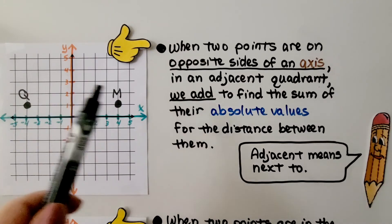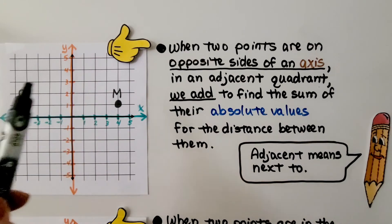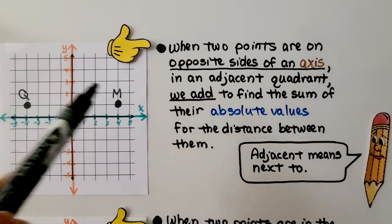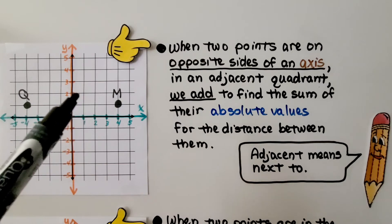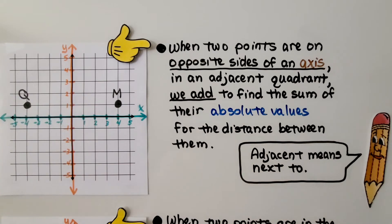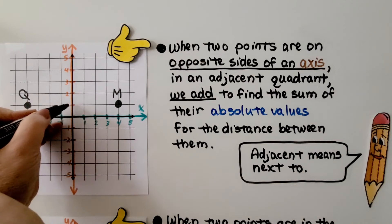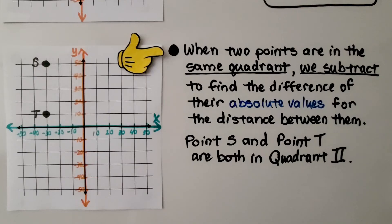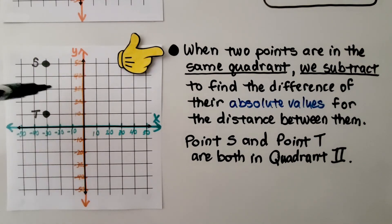When two points are on opposite sides of an axis — like points Q and M, which are on opposite sides of the y-axis in adjacent quadrants — we add to find the sum of their absolute values for the distance between them. When two points are in the same quadrant, we subtract to find the difference of their absolute values. Points S and T are both in quadrant two, so there's no axis between them — we subtract.